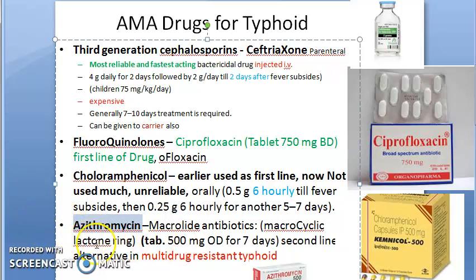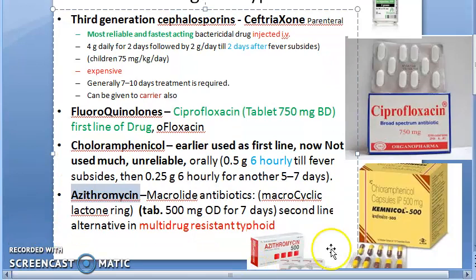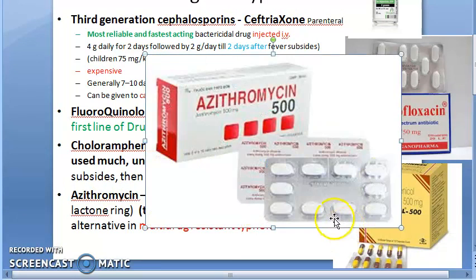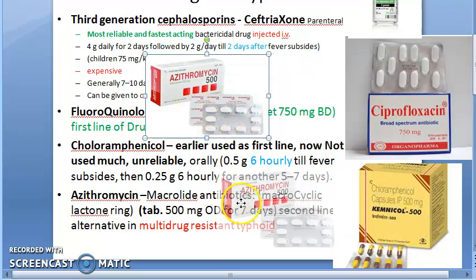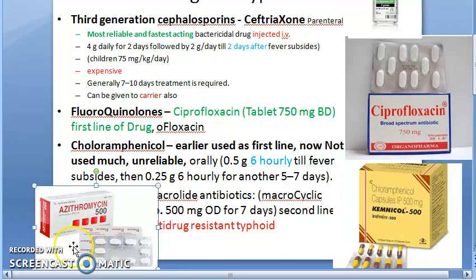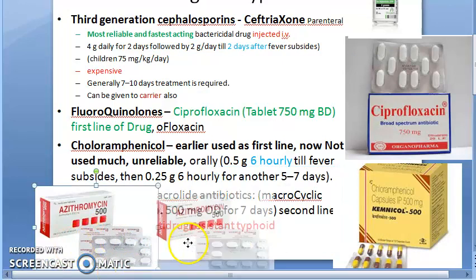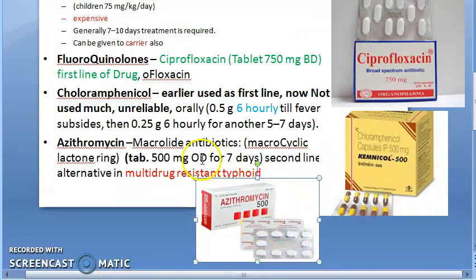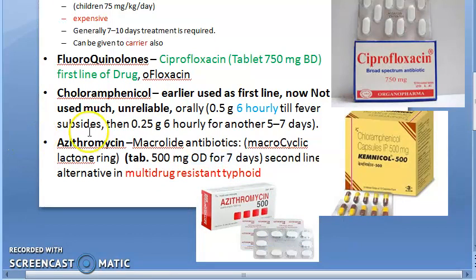Azithromycin is used for multi-drug resistant typhoid. The dose is 500 mg once daily for 7 days. It is a macrolide antibiotic.